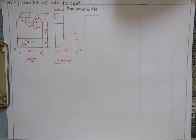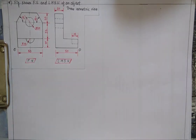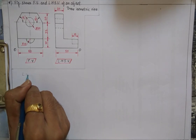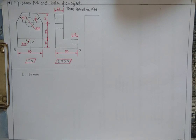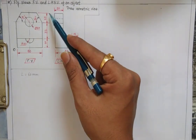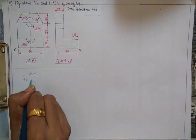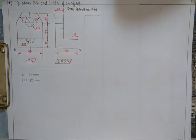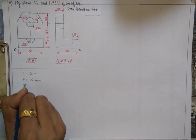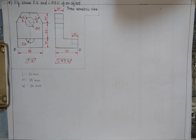From the front view we get the length of the object, which measures 60 mm. So length equals 60 mm. The height of the object, also from the front view, measures 20 plus 32 plus 20, giving an overall height of 72 mm. From the left-hand side view we get the width of the object, which is 50 mm. So we note: length = 60 mm, height = 72 mm, width = 50 mm.